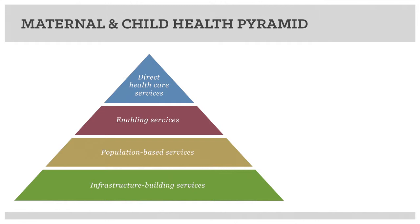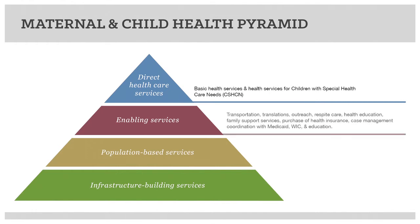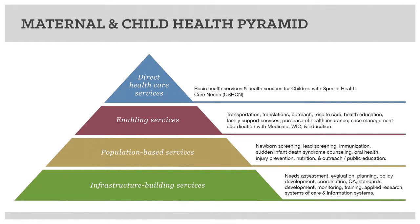Step three is where we begin to explore the conceptual framework for the services of the Title V Maternal and Child Health Block Grant. This is envisioned as a pyramid with four tiers of services and levels of funding that provide comprehensive services for mothers and children. The pyramid also displays the uniqueness of the MCH Block Grant, which is the only federal program that consistently provides services at all levels of the pyramid.